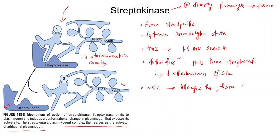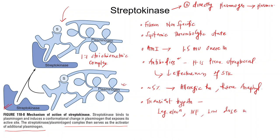Streptokinase may also produce transient hypotension. This transient hypotension will respond to elevation of the legs or IV fluids, or may sometimes require low-dose inotropes like dopamine or noradrenaline. If you have managed cases of myocardial infarction, you must have experienced many times that hypotension due to streptokinase is a benign condition.